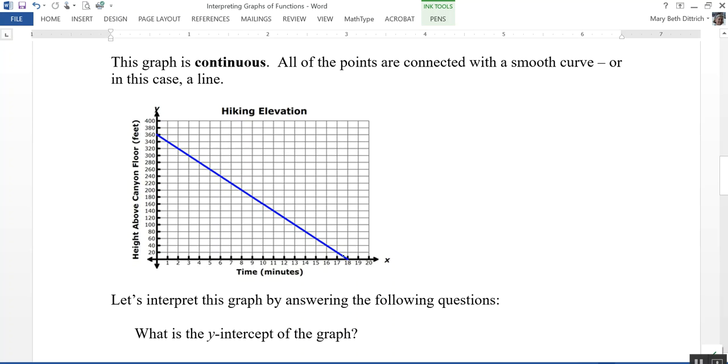My x-intercept is 18, or 18 minutes. What does that mean? Well, at this point, at 18 minutes, you'll notice that my height above the canyon floor is zero. In other words, it's taken this hiker 18 minutes to get to the bottom of the canyon.